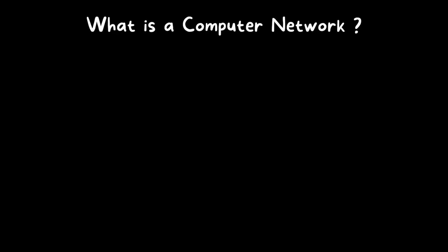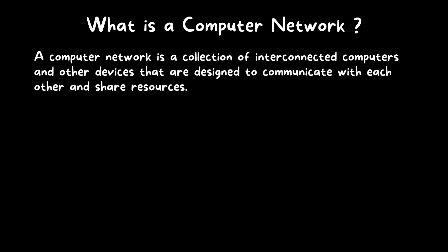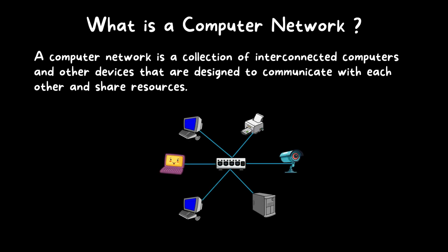What is a computer network? A computer network is a collection of interconnected computers and other devices that are designed to communicate with each other and share resources. Consider the image shown on the screen — you can see multiple devices connected together using a network media: one PC, one laptop, another PC, a server, one IP camera, and a printer, all connected with the help of network media.